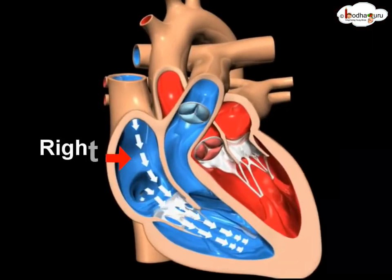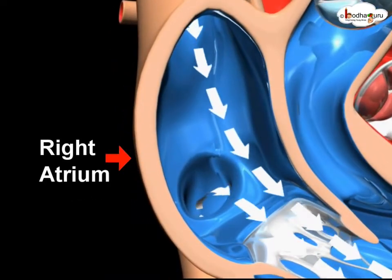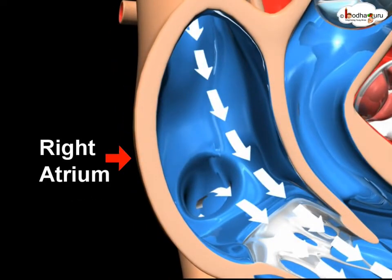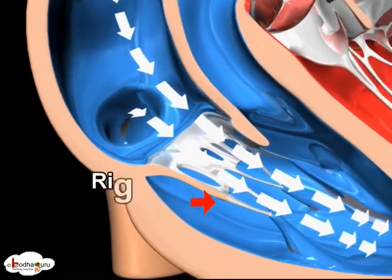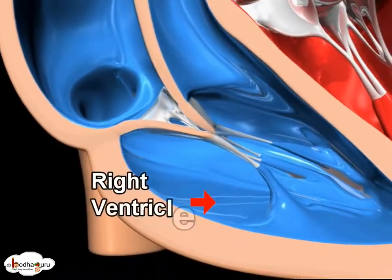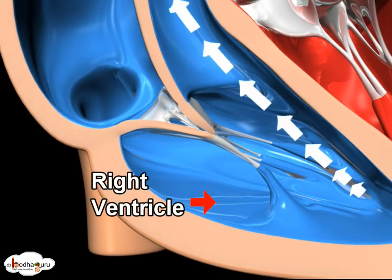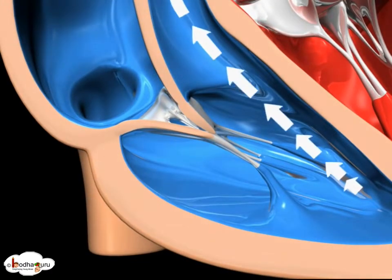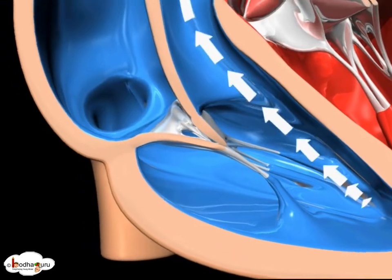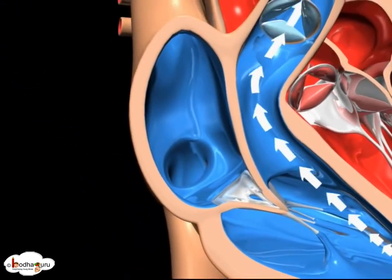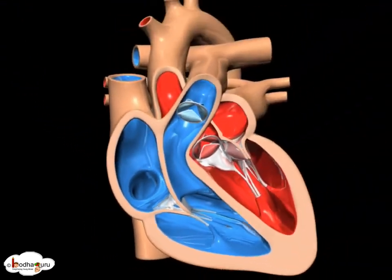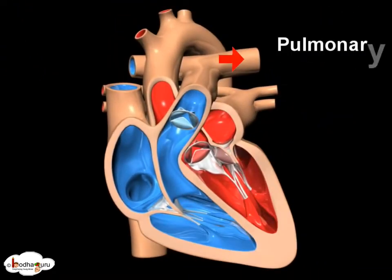The right upper atrium receives deoxygenated blood from the whole body, which is pumped into the right ventricle below, and it sends the blood to the lungs for oxygenation via the pulmonary artery.